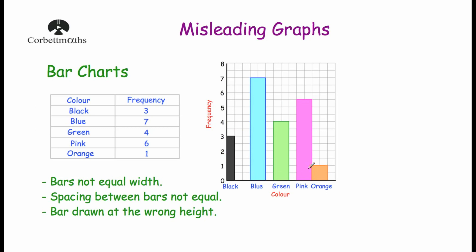Another thing that's wrong with this bar chart is the space between the bars — they should all be equal. The space between black and blue is two squares, whereas between blue and green it's one, green and pink is one, and pink and orange actually touch. So the spacing is not consistent. Also, one of the bars is drawn at the wrong height: pink is drawn at 5.5 but it should be at 6. So three things wrong with this bar chart: bars are not equal widths, spacing between bars is not consistent, and one bar is drawn at the wrong height.